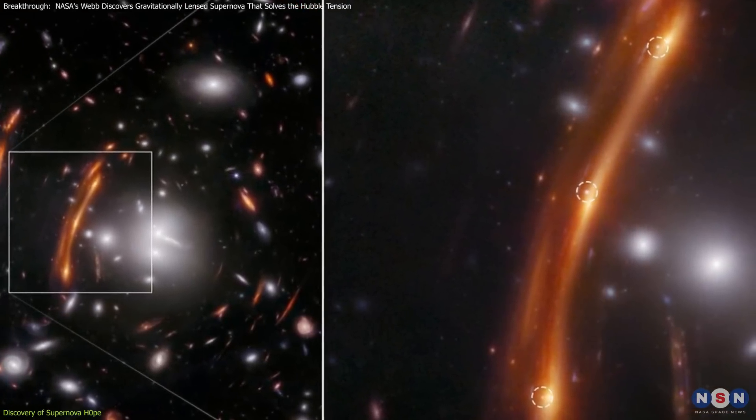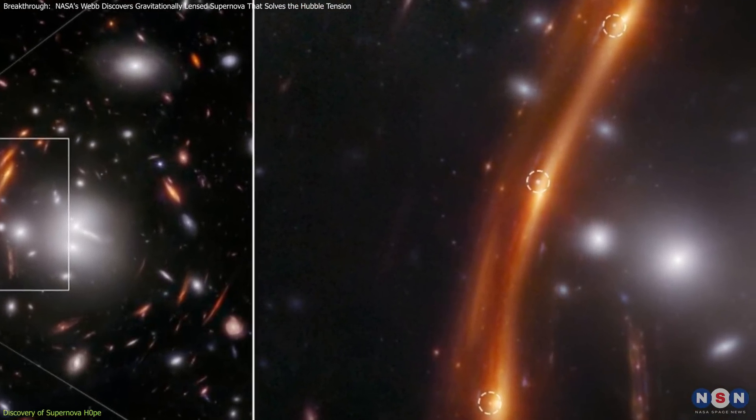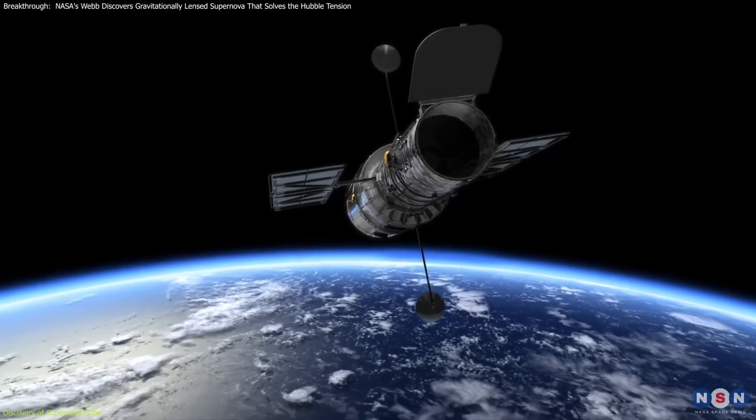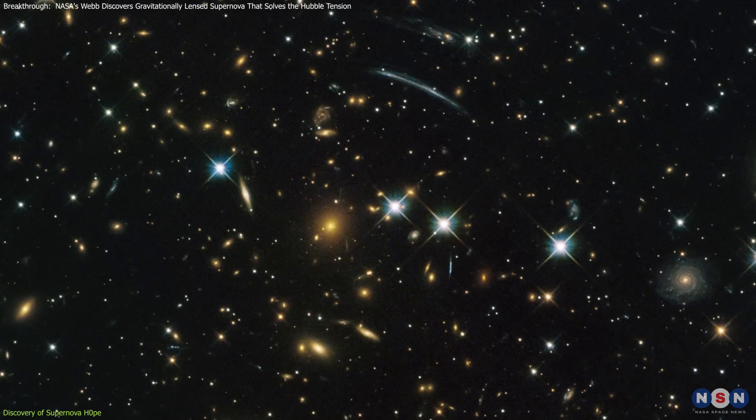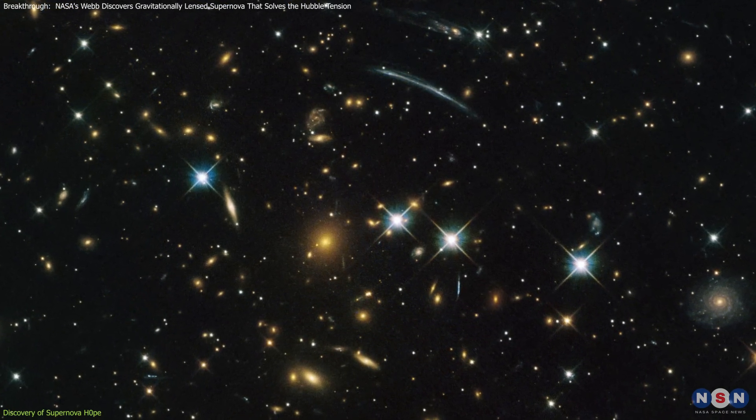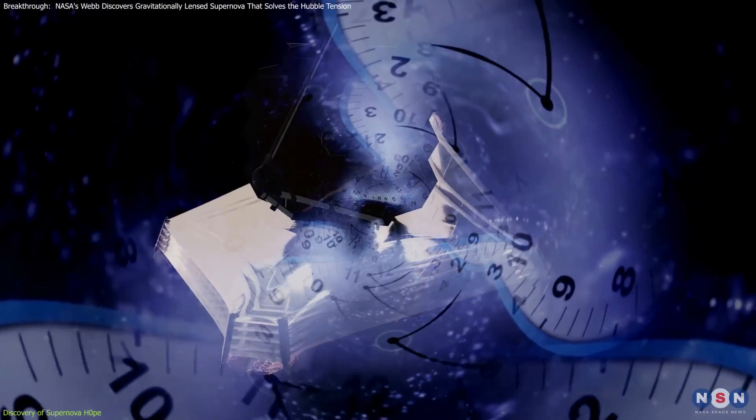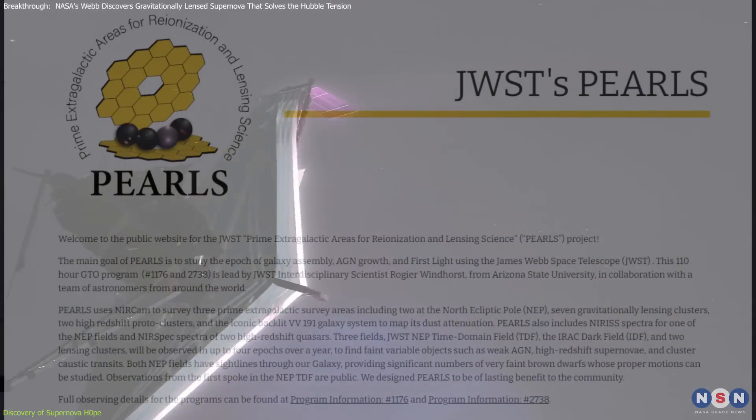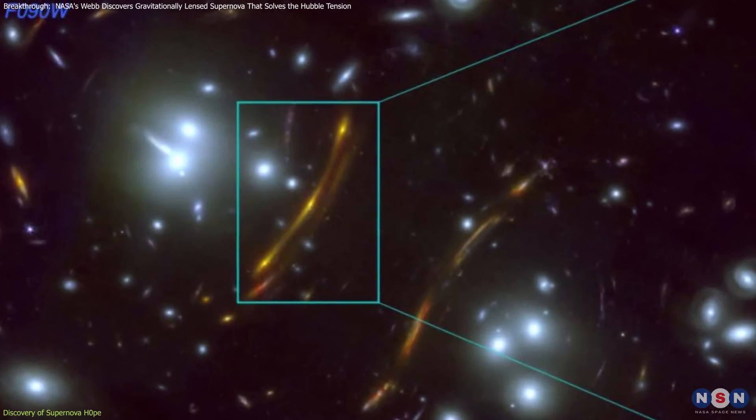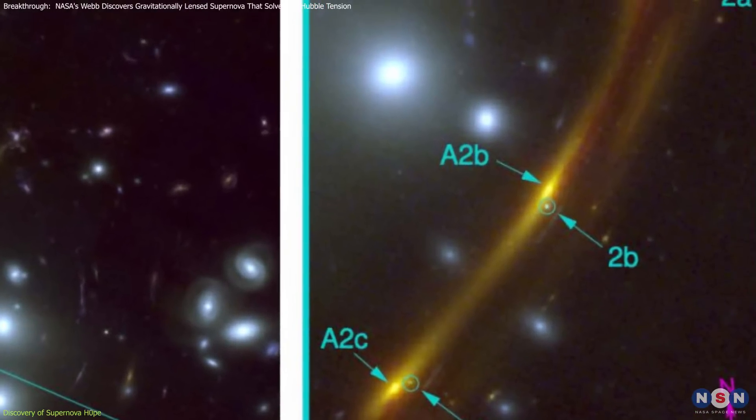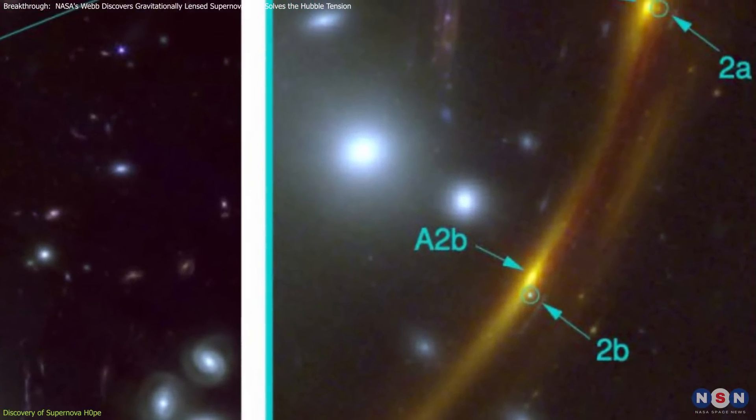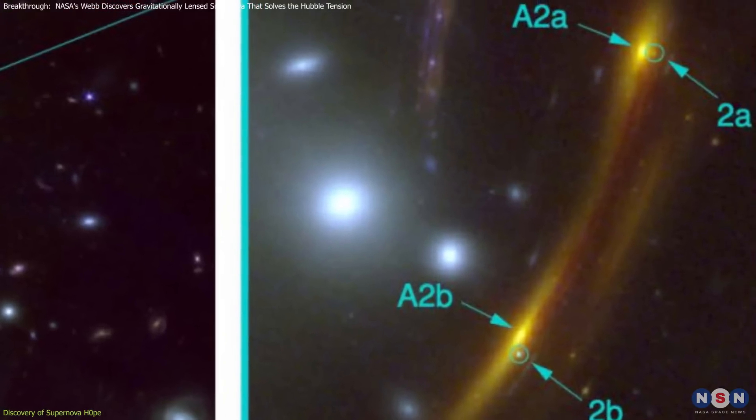Now, you might be wondering how exactly astronomers discovered this supernova. In 2015, the Hubble Space Telescope took images of the same galaxy cluster, but the supernova wasn't there. Fast forward to when Webb's Guaranteed Time Observations of the Prime Extragalactic Areas for Reionization and Lensing Science program snapped images of the cluster in 2023. The team noticed three dots of light that weren't present in the Hubble images and immediately suspected that they had found a new supernova.